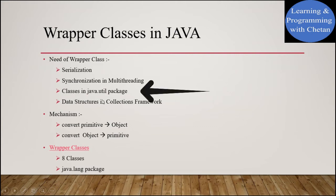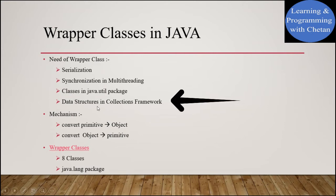If we talk about the java.util package, all the utility classes present inside this package operate on objects. And if we talk about the collections framework, the data structures used in collection frameworks operate on objects — whether it is an ArrayList, LinkedList, Set, or Map. The complete collection framework operates on objects. That is why we need Wrapper classes, so that we can easily convert primitive data types into objects and objects into primitive data types.